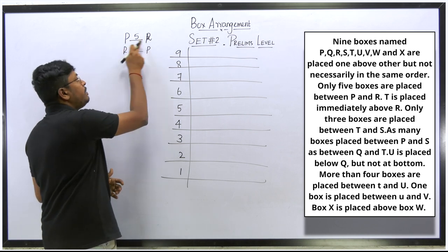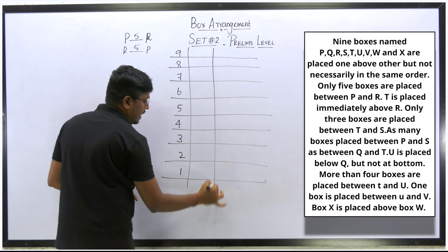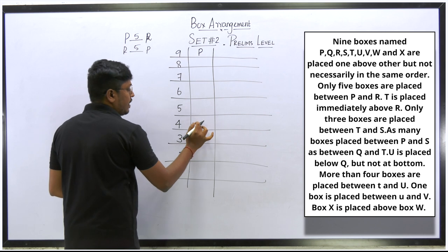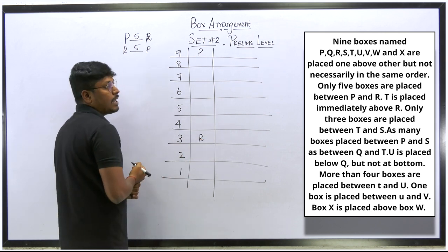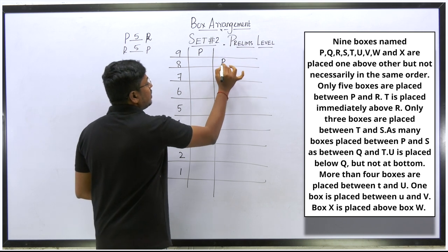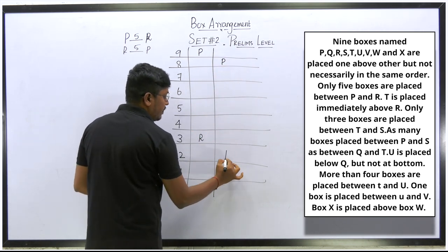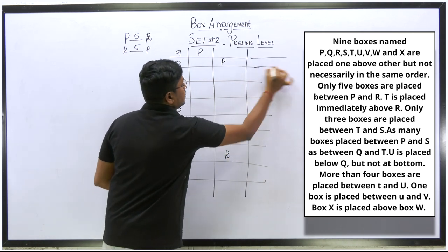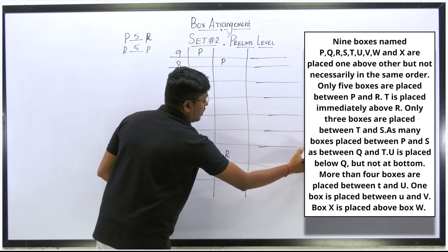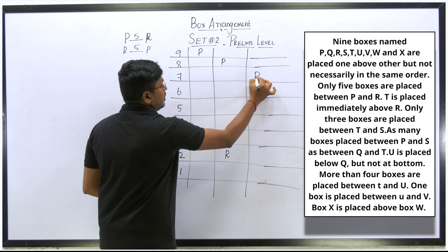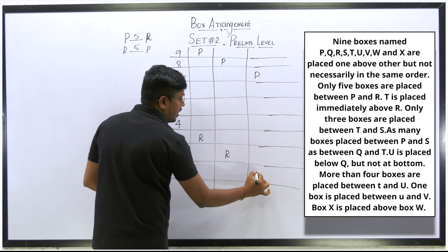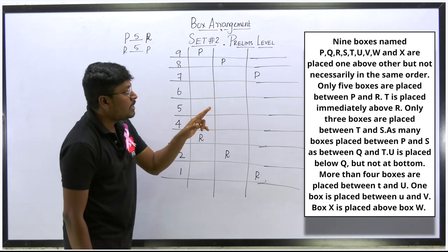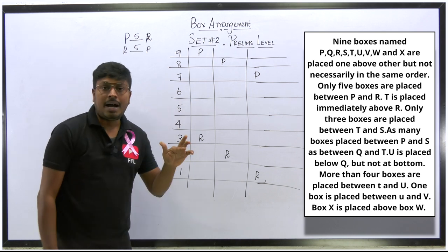Between P and R there should be a gap of five boxes. In the first diagram, I fix P at position 1 — one, two, three, four, five — so R is at position 7. In the second diagram, P is at position 2, making R at position 8. In the third diagram, P is at position 3 and R at position 9.